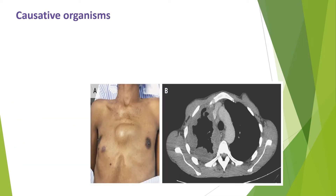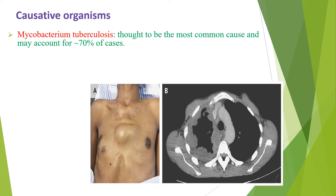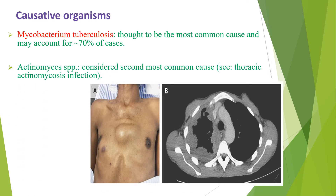The causative organisms for empyrema necessitans: Mycobacterium tuberculosis is thought to be the most common cause, responsible for about 70% of cases. You should always think of Mycobacterium tuberculosis if you find a patient with empyrema necessitans. The second most common cause is actinomycosis.